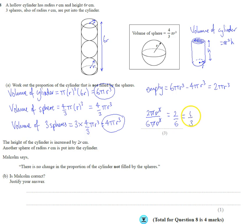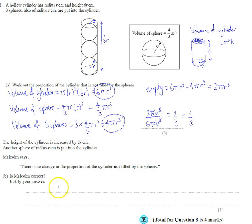Now, that's important — the proportion has nothing to do with r or pi, it's just a number. So when the height is increased by 2r — basically adding another ball on top and extending the cylinder — Malcolm says there's no change in the proportion not filled by spheres. That's true because the proportion between the number of spheres and the height is constant.